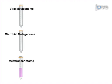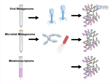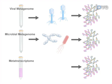Finally, individual aliquots are processed separately to isolate and purify viral or bacterial cells prior to nucleic acid isolation for metagenomic studies.